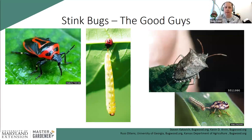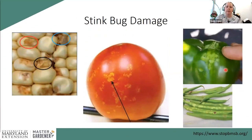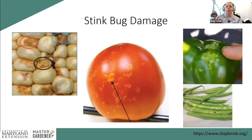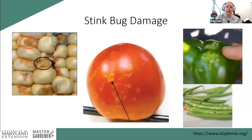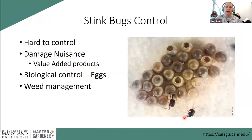Stink bug damage from their piercing-sucking mouthparts appears as dents on sweet corn, or a shadowy/cloudy look on peppers and tomatoes. Both a damaged tomato and pepper are still completely edible — from a backyard gardener's perspective, you don't necessarily need to control stink bugs unless you're seeking pristine produce. I've eaten many stink-bug-affected tomatoes throughout my life. They are hard to control, and the damage tends to be nuisance only.